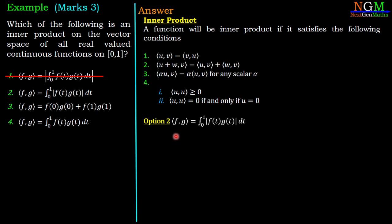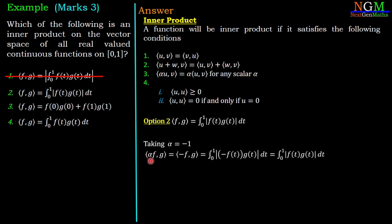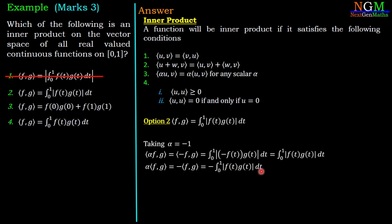For option 2, ⟨f,g⟩ = ∫₀¹ |f(t)|g(t)dt. This is similar to option 1. Taking α = −1 and checking condition 3: ⟨αf, g⟩ = ∫₀¹ |−f(t)|g(t)dt = ∫₀¹ |f(t)|g(t)dt (positive), but α⟨f,g⟩ = −∫₀¹ |f(t)|g(t)dt (negative). These are not equal, so condition 3 is not satisfied and the operation is not an inner product. Option 2 is also wrong.